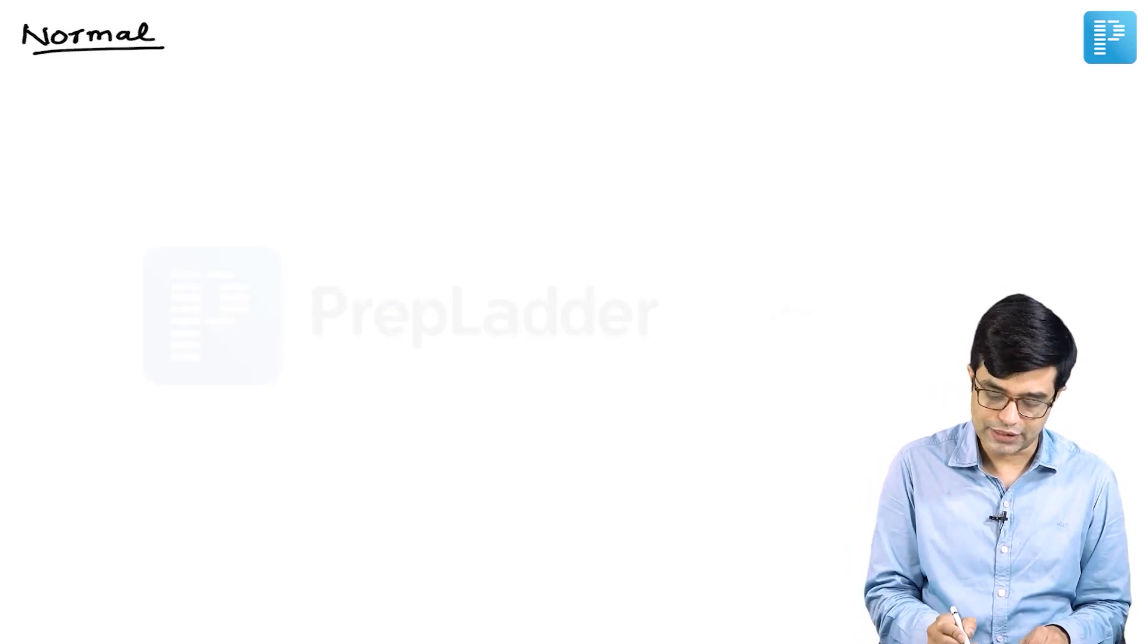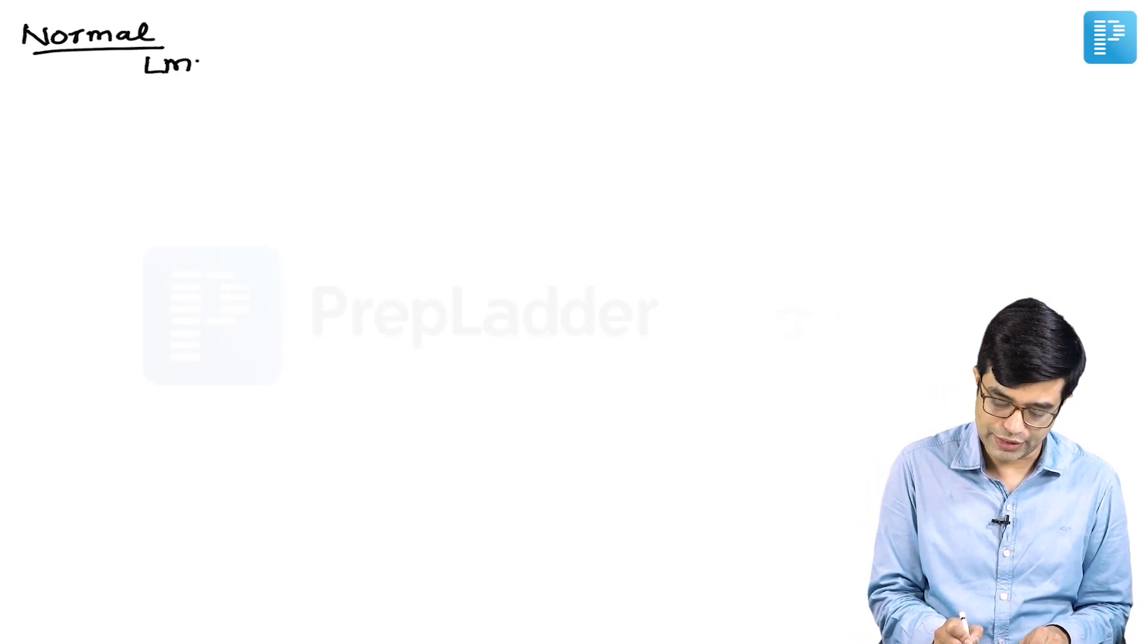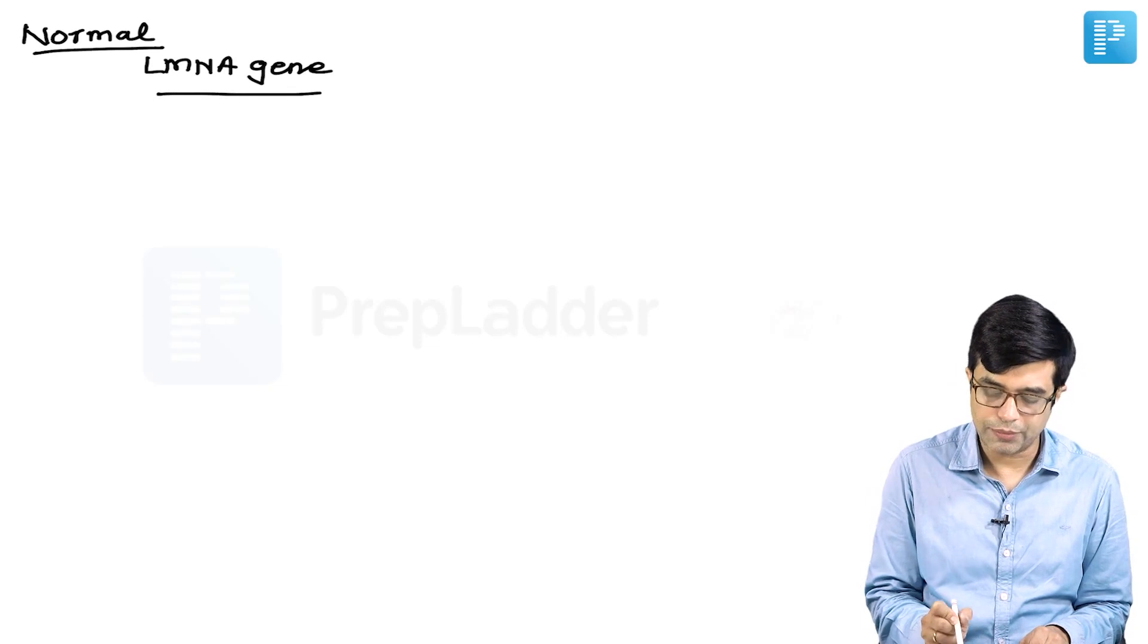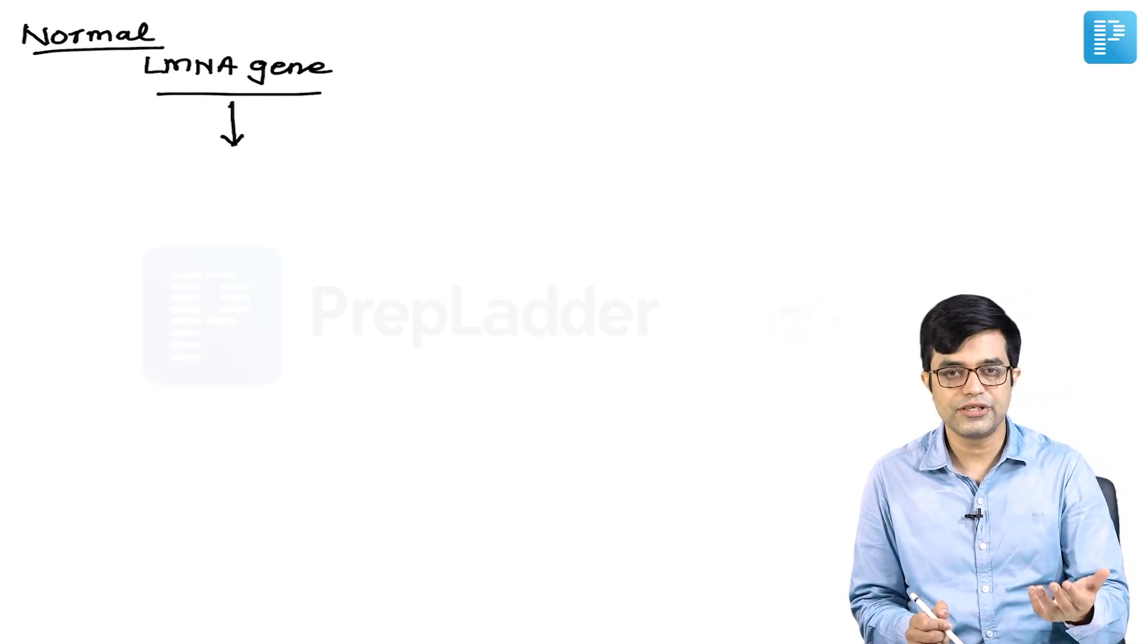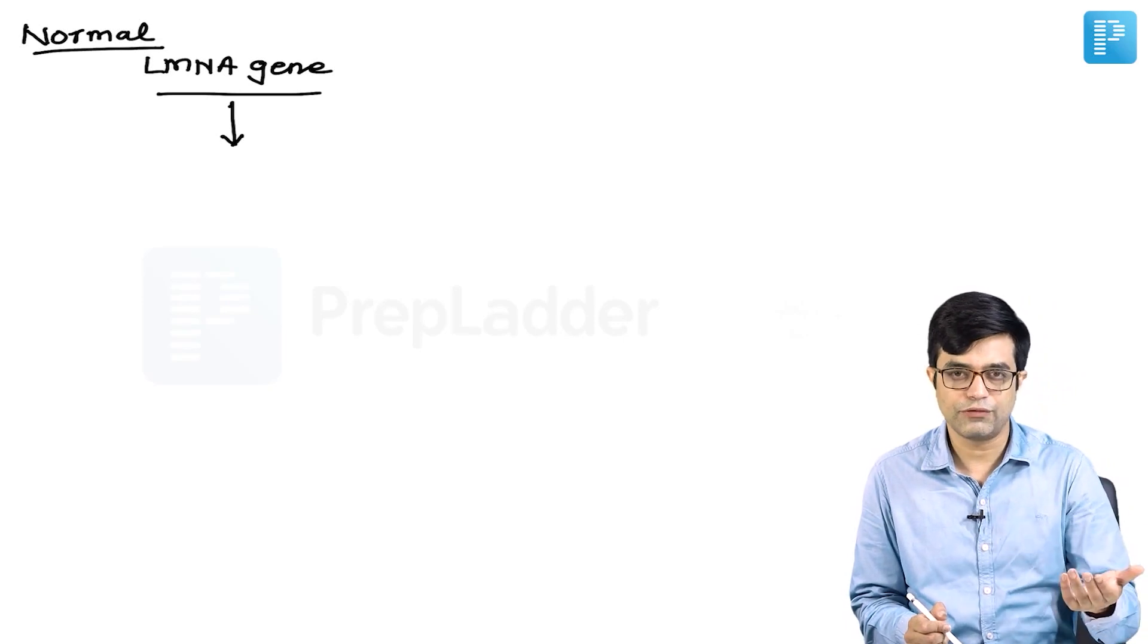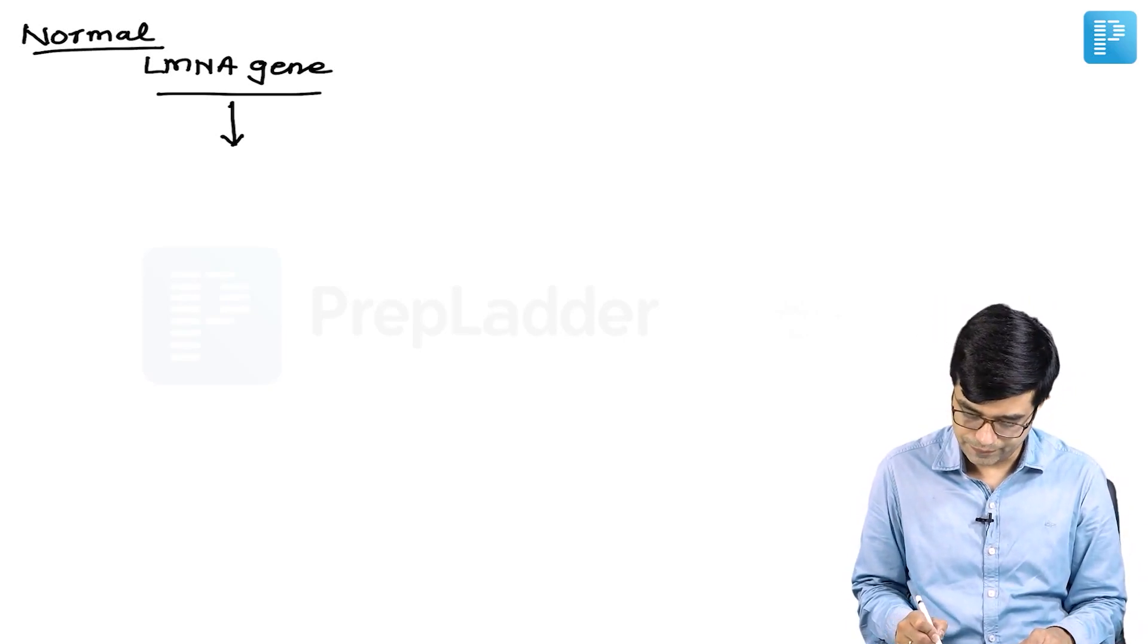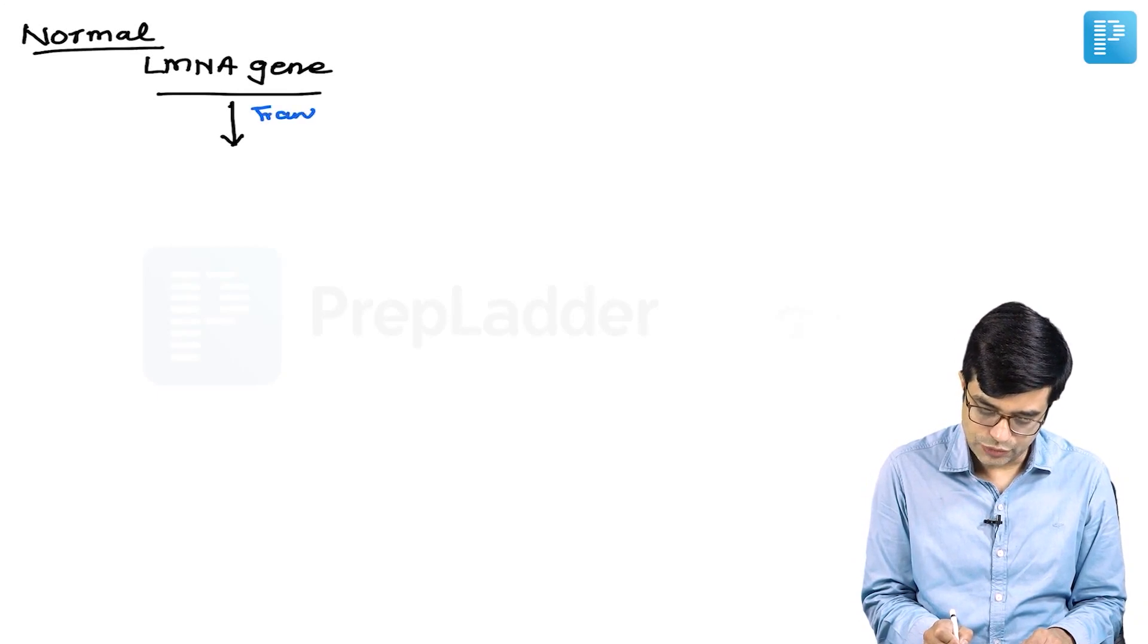In a normal person, there is a gene called LMNA. When this gene operates normally, first translation happens for the formation of a protein. There will be translation leading to the formation of... let me try to simplify whatever I have said, so that all this mumbo-jumbo makes more sense.